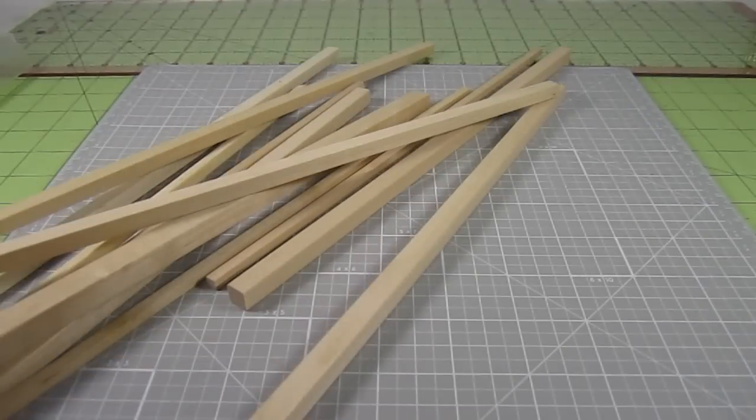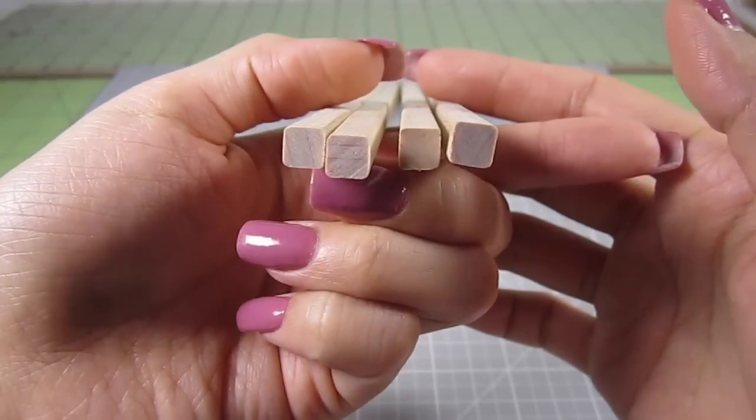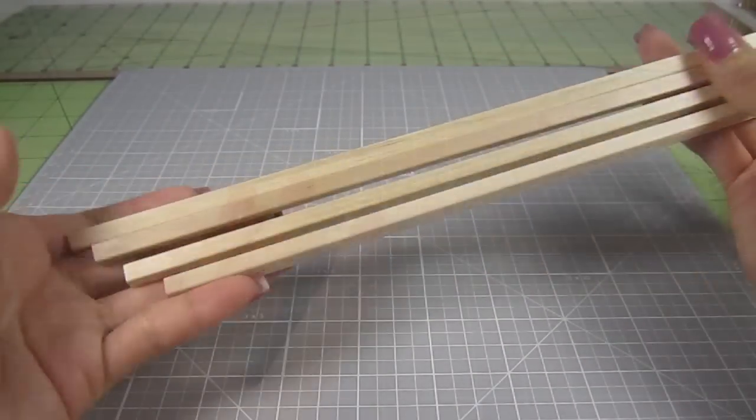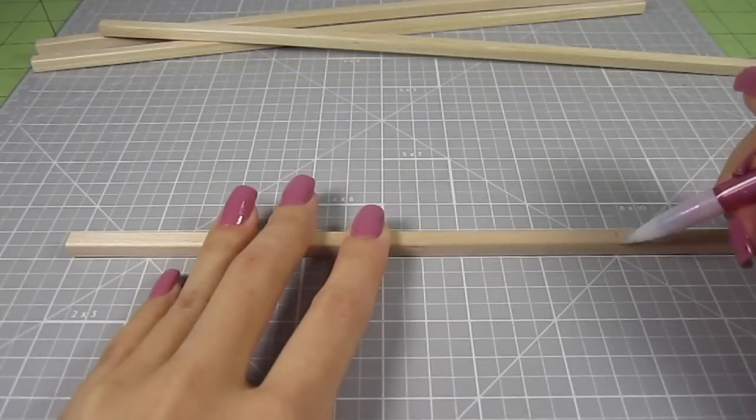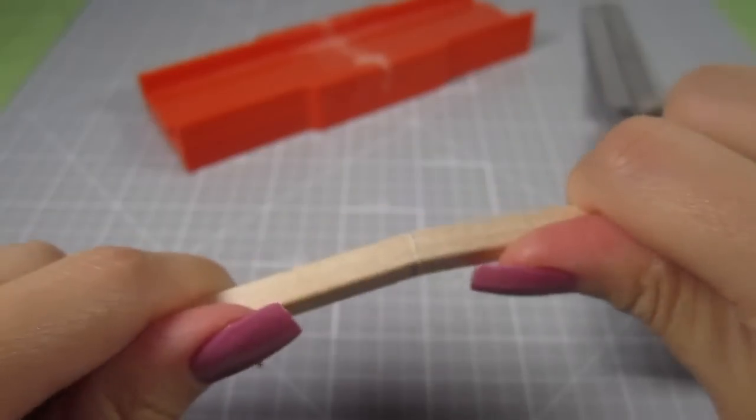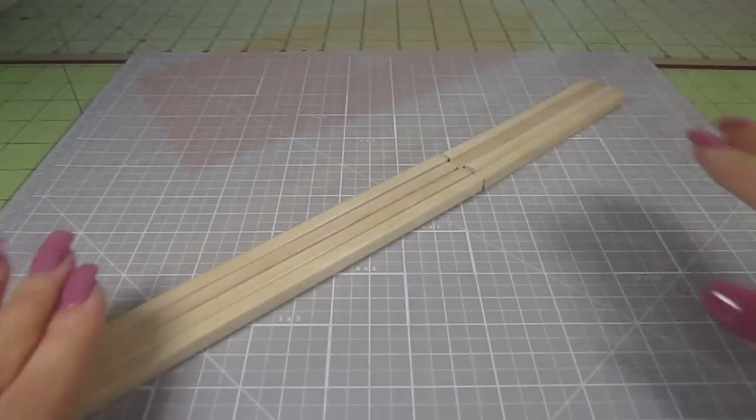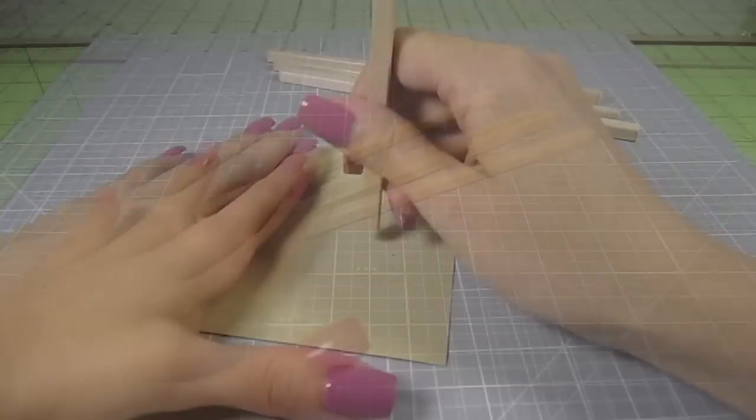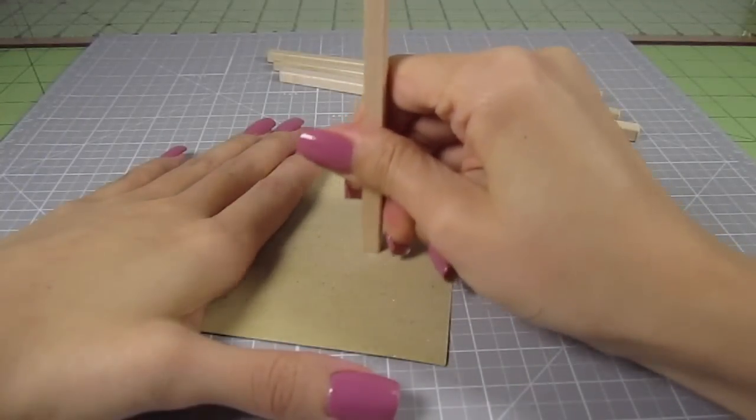The first thing you need is some square dowels. These are a quarter inch thick. We'll need 4 of these. Cut them down to 7 inches in length. This will be the height of your bed. I cut them down with a miter hand saw. Sand down the ends so they're smooth. Put those aside for now.